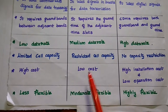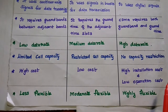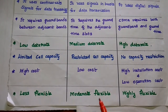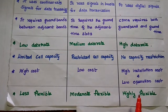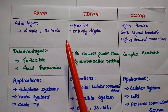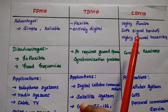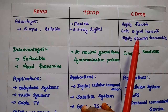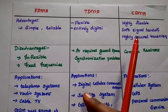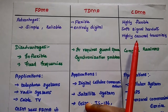FDMA is a high cost method. TDMA is a low cost method. CDMA has high installation cost but low operation cost. FDMA is a less flexible method, TDMA is moderately flexible, and CDMA is a highly flexible method. Advantages: FDMA is simple and reliable. TDMA is flexible and entirely digital. CDMA is highly flexible with soft signal handoff — unlike FDMA and TDMA which have hard handoff signals. CDMA also provides highly secured transmission, which is a major advantage.